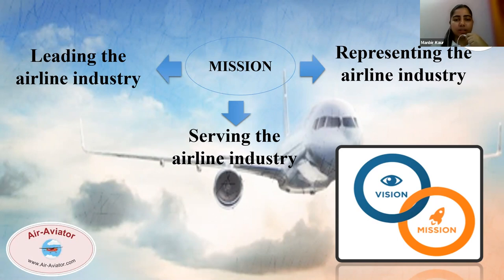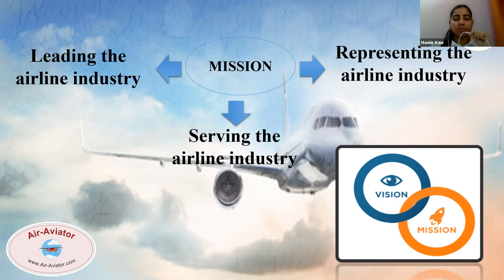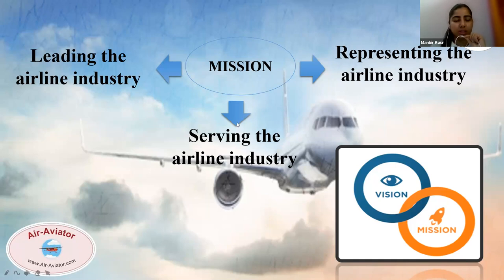IATA also handles all of the rules and regulations related to airports and airlines. They also ensure safety standards, as well as introducing new technologies into the market — like the concept of e-ticketing. Earlier, what we had to do was rush to the airport and get tickets at the time. Its mission is serving the airline industry, providing air ticketing, thinking about the customers, and representing the airline industries. I hope you have got to know much about this organization.